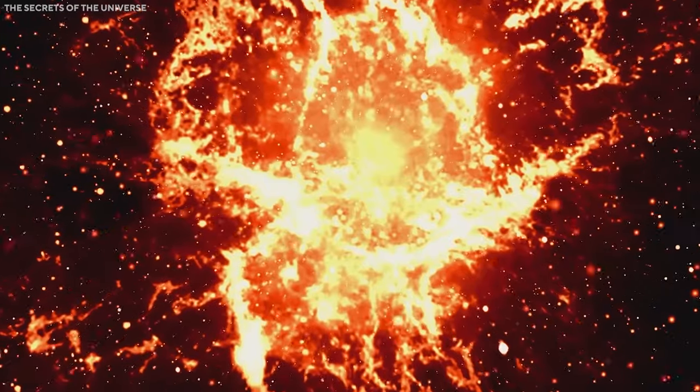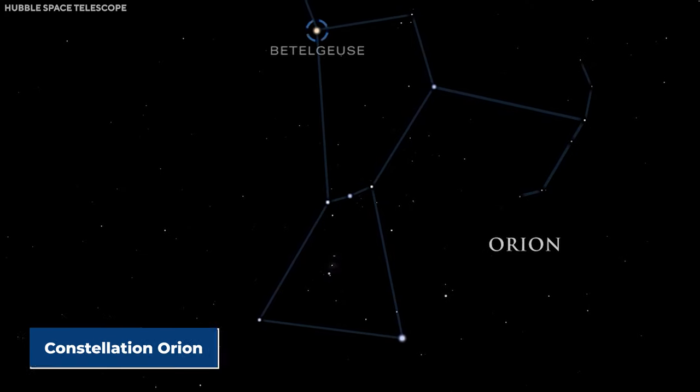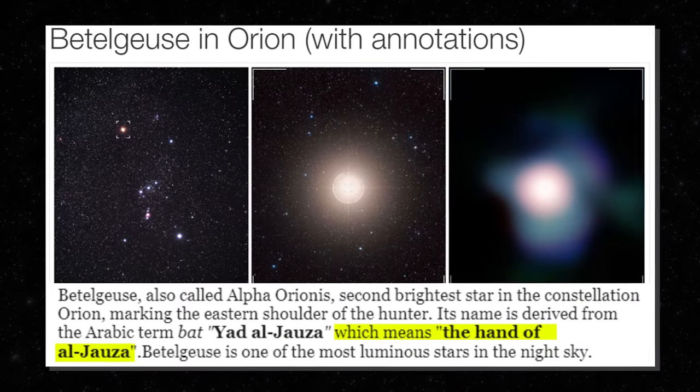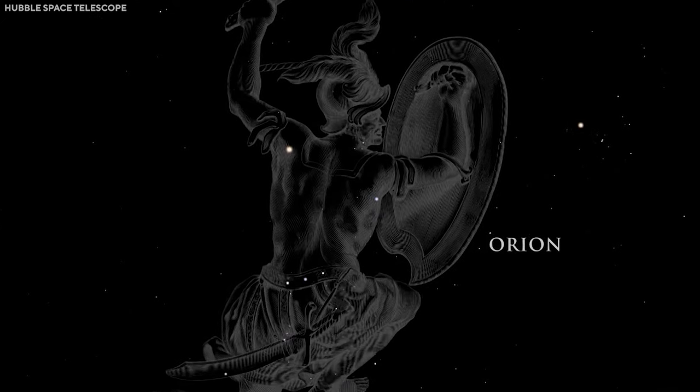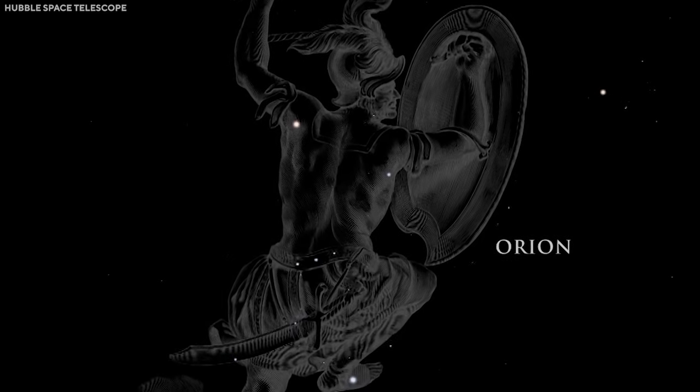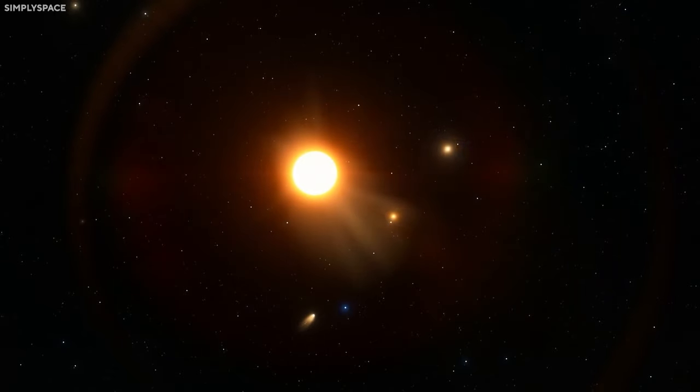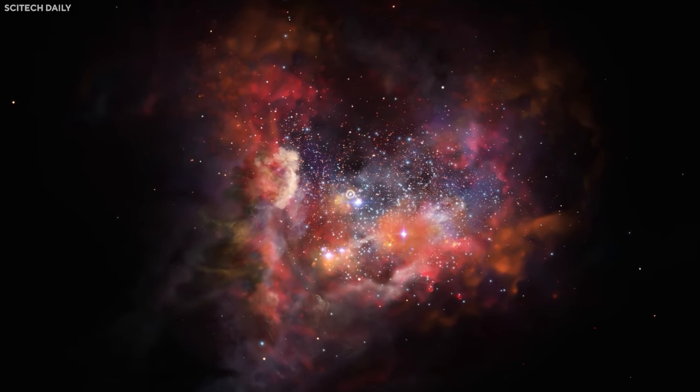With its name resounding through the annals of celestial lore, it occupied a prominent position in the constellation Orion. Its name is uniquely derived from the Arabic phrase, Yad al-Jawza, meaning the Hand of al-Jawza, and this reflects its role as one of the two brilliant stars marking Orion's shoulders. Its immense size and brightness captivates stargazers, as it easily graces the naked eye with visibility.